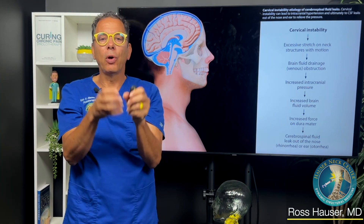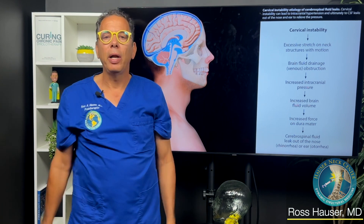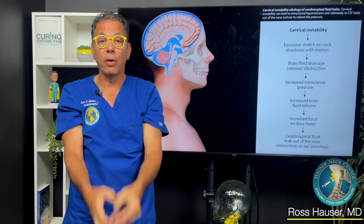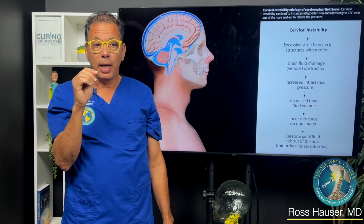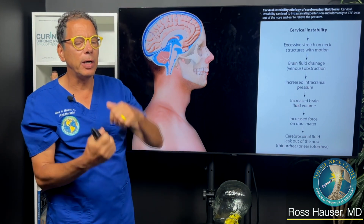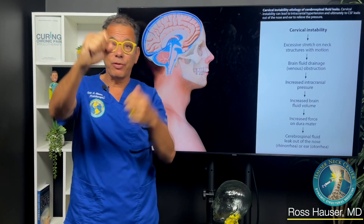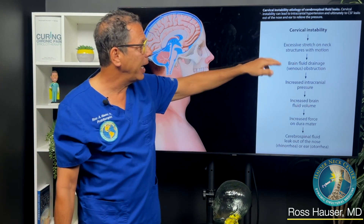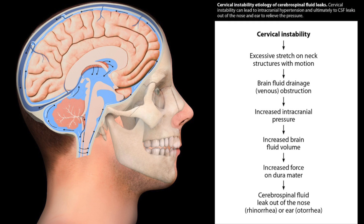You have the spinal cord and the brain, then you have membranes around the brain — the main one is called the dura mater. This connective tissue tube is keeping the fluid in there. If you've had cerebral spinal fluid leaks and they're having trouble figuring out the cause, it may be because you have ligament issues. When you have ligament issues in the neck, the dura mater is going to have to move a lot more than normal, because instability means the vertebrae move excessively. Eventually you get a cerebral spinal fluid leak because of increased force on the dura mater.